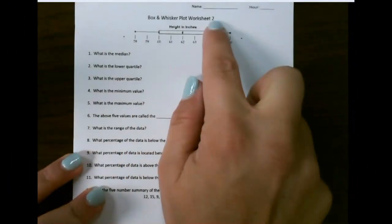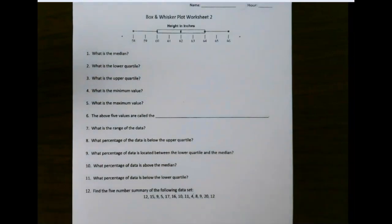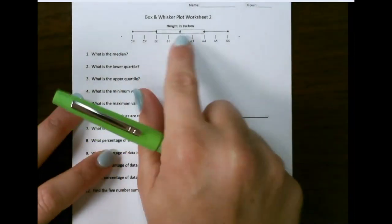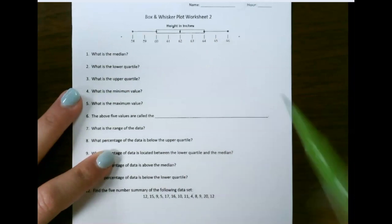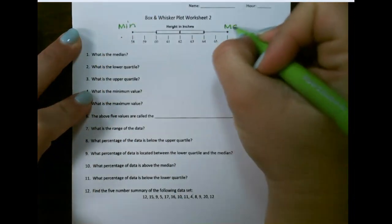Let's look at box and whisker plots, interpreting and answering questions about the box and whisker plot. So again, we have five points on our graph, this one being the minimum and the maximum on the ends.